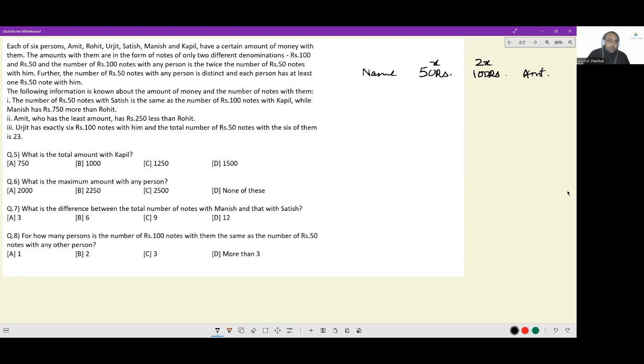Let's work. The number of rupees 50 notes with Satish is same as the number of rupees 100 notes with Kapil. Okay, so if I put Kapil here and he has a 50 rupee notes, he will have 2a 100 rupee notes. And this number is identical to Satish's 50 rupee notes. So this is 2a and by extension, this will be 4a.